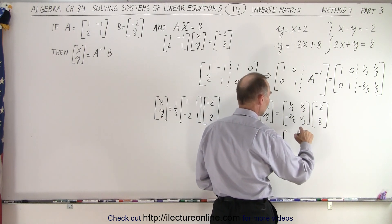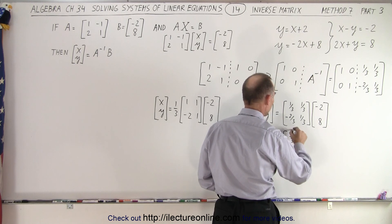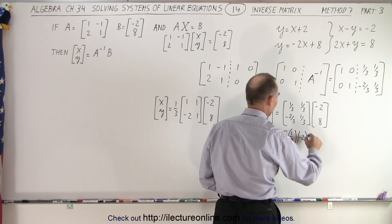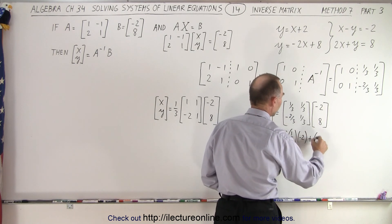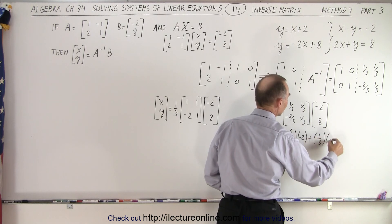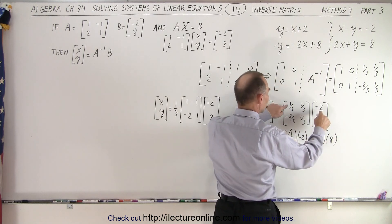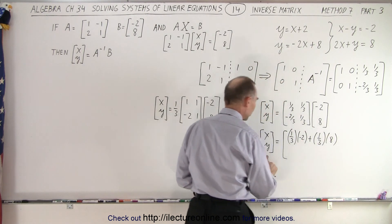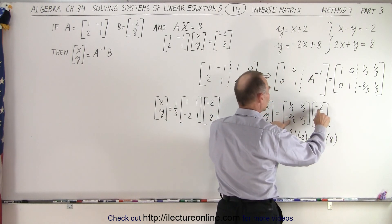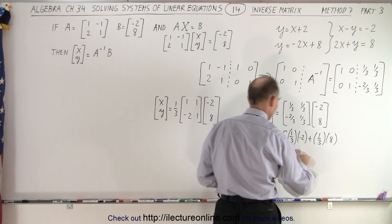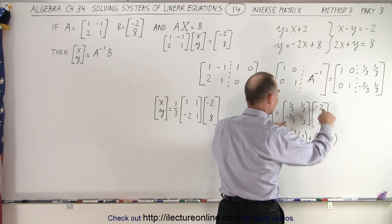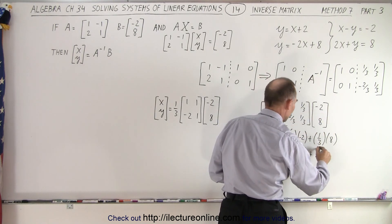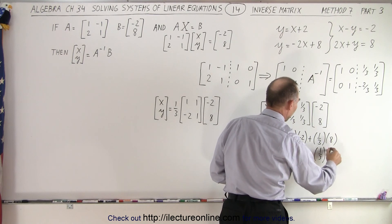you get one third times negative two plus one third times eight. So that's this times this plus this times this. In the bottom, that equals y, you get negative two thirds times negative two. And you add to that the multiplication of those two. That would be one third and eight.